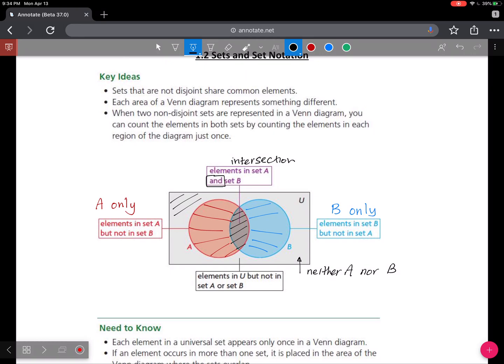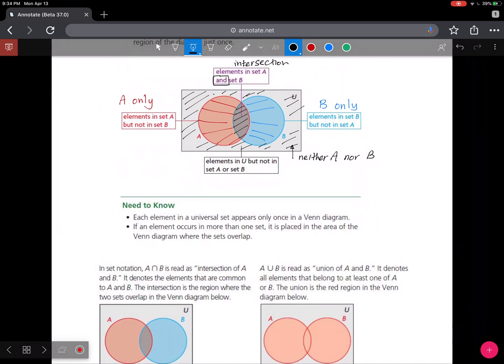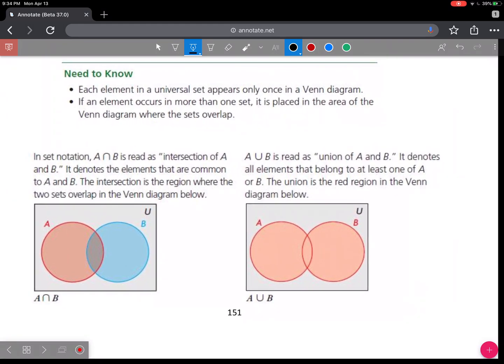Need to know. Each element in a universal set appears only once in a Venn diagram. So that's super important. We talked about that in the last lesson as don't count things twice. If an element occurs in more than one set, it is placed in the area of the Venn diagram where the sets overlap.